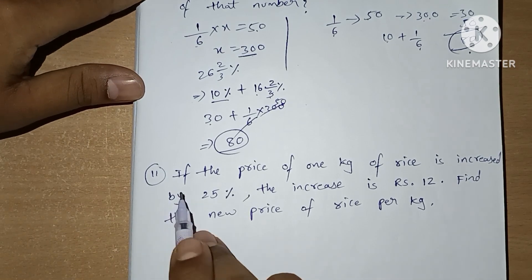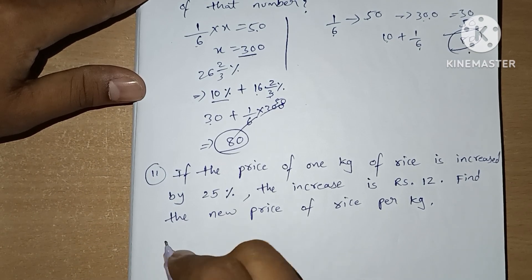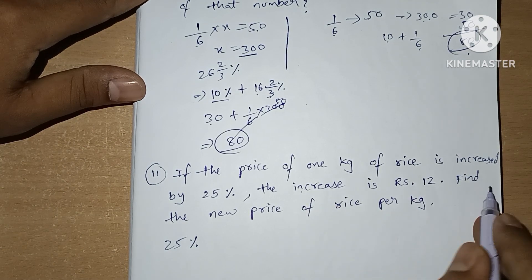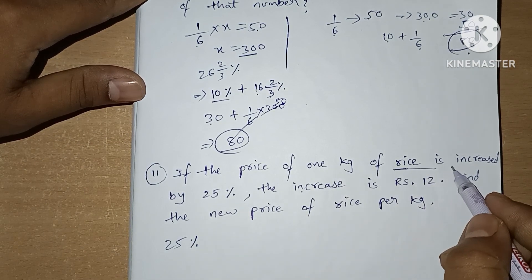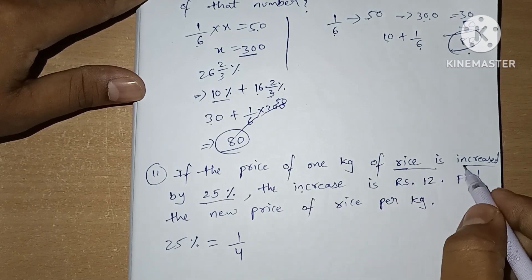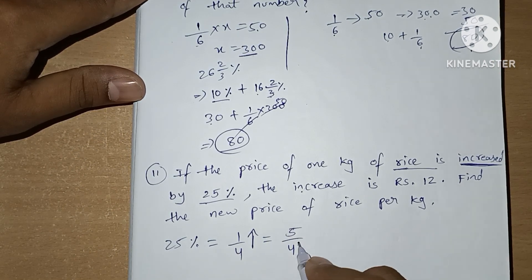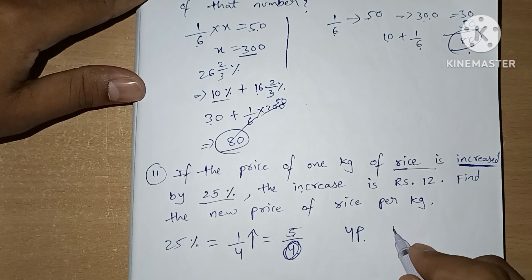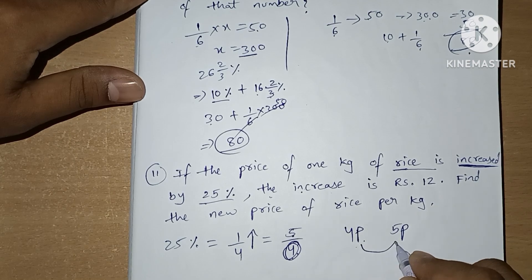Question 11: If the price of 1 kg of rice is increased by 25%, and the increase is 12 rupees, find the new price per kg. 25% has a fraction value of 1/4. Increased means: initially 4 parts, now it becomes 5 parts. The difference between the two is 1 part, and that 1 part equals 12 rupees.